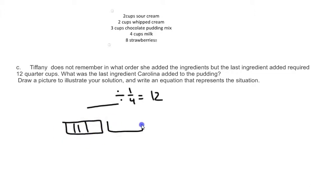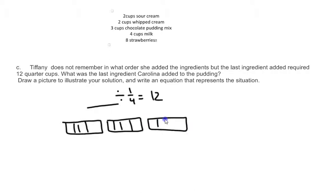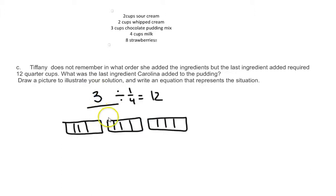With two cups it would take eight quarter cups. With three cups, that would be twelve — one, two, three, four, five, six, seven, eight, nine, ten, eleven, twelve quarter cups in three wholes. So our answer would be three divided by one fourth equals twelve. That would be three cups of pudding mix.